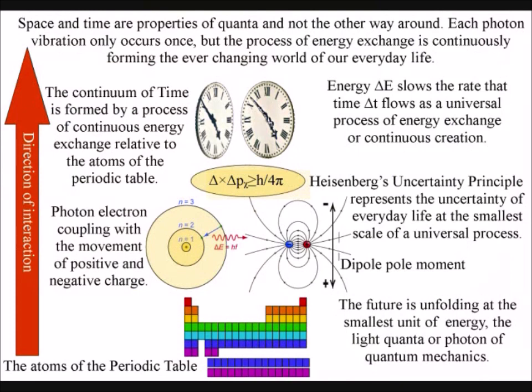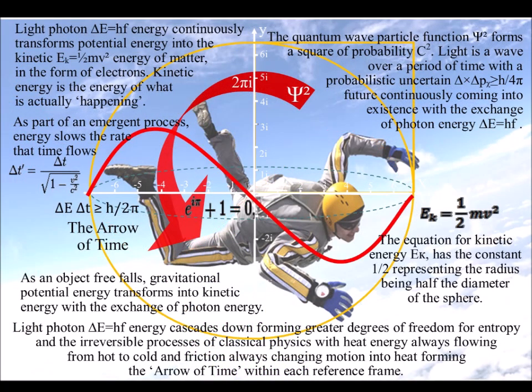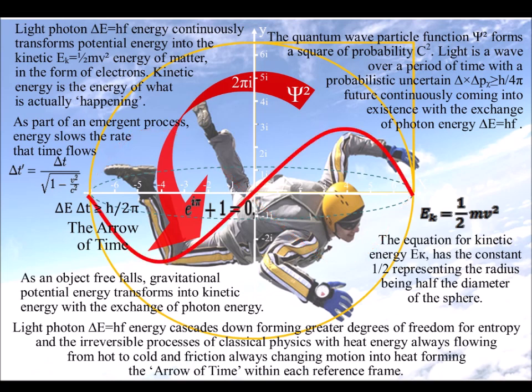Kinetic energy is the energy of what is actually happening. As objects freefall towards the ground, gravitational potential energy is transformed into kinetic energy with the spontaneous absorption and emission of photon energy, continuously forming a probabilistic, uncertain future.